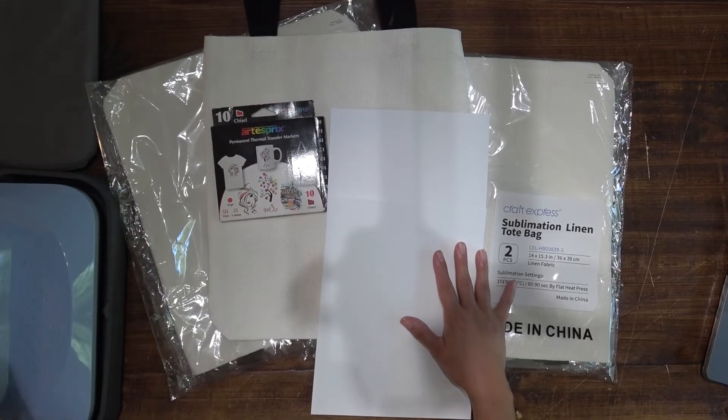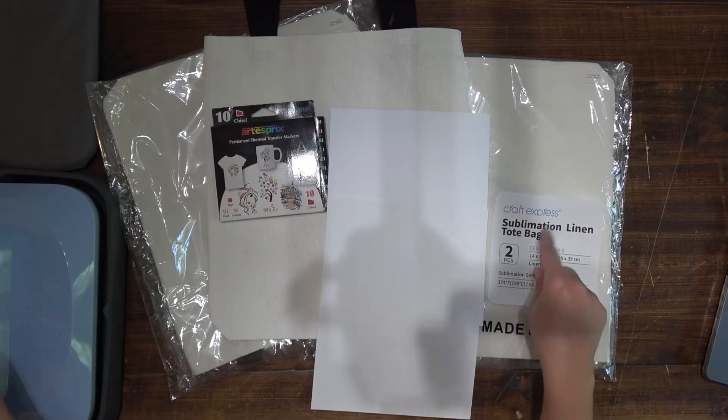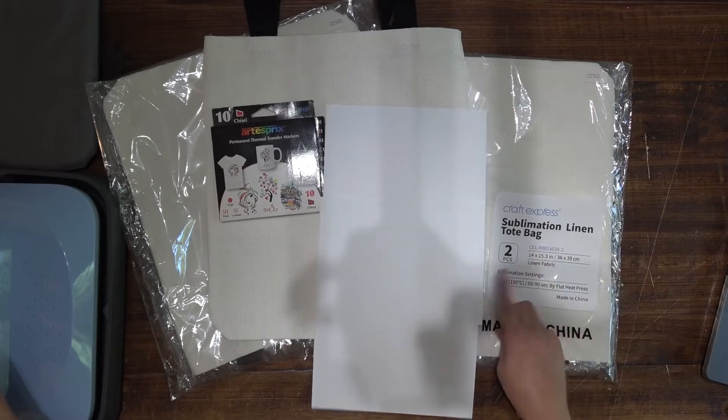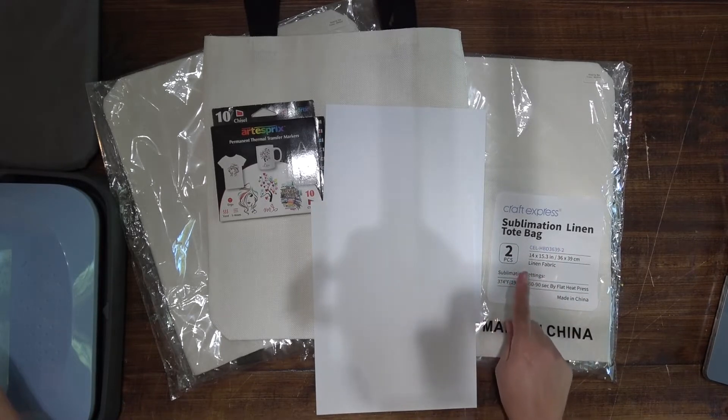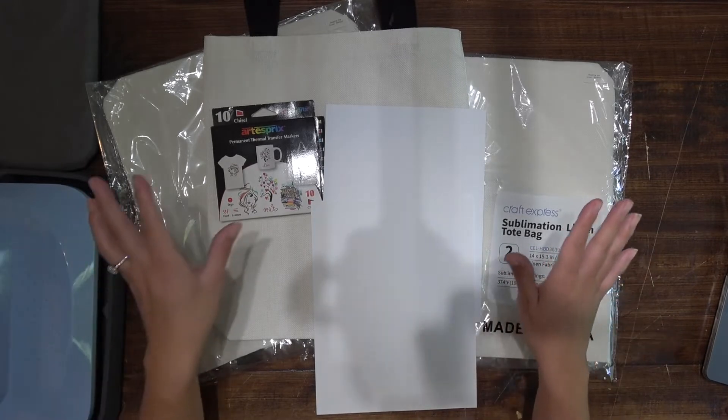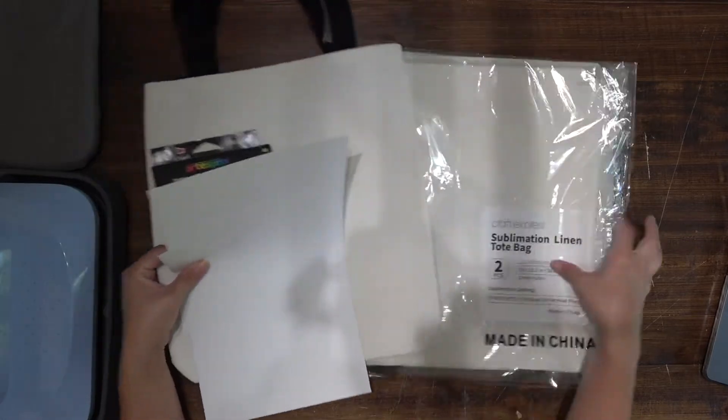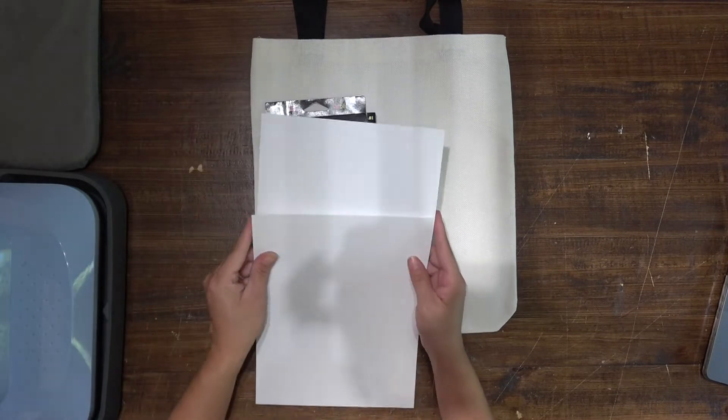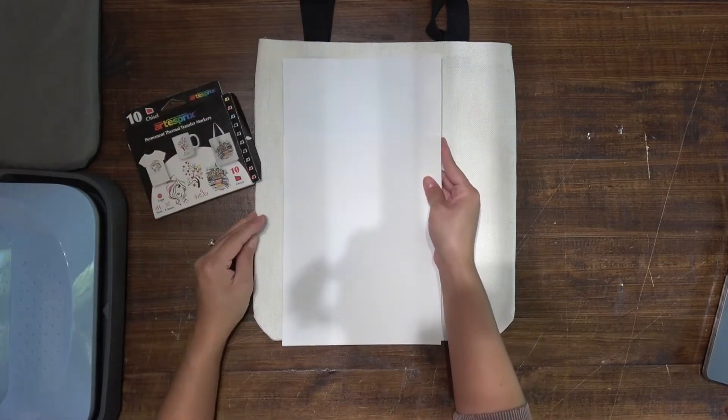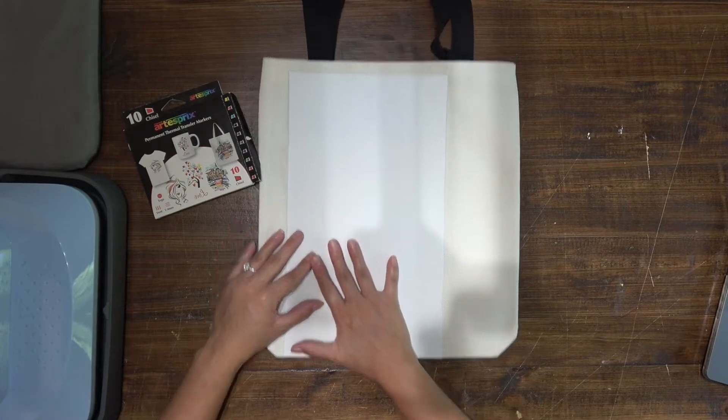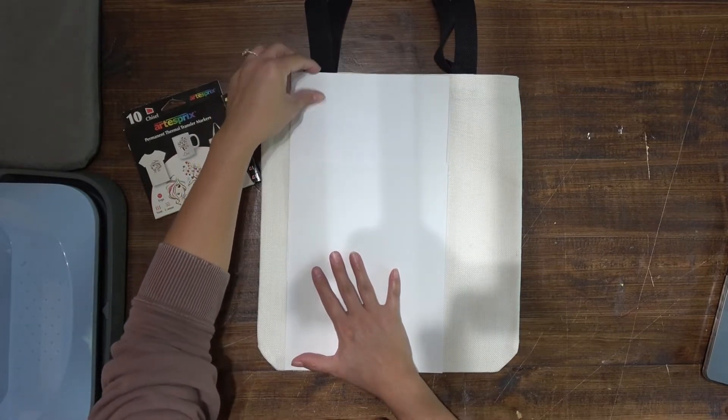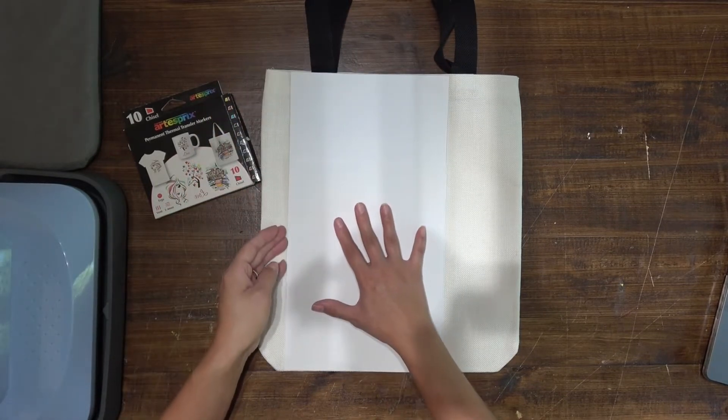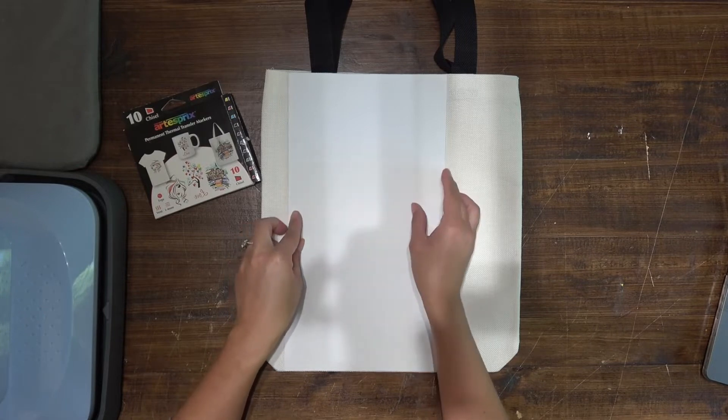So I already have my heat press set up. The cool thing about Craft Express, all their blanks, they come with your settings already on there. So it's at 374. We're going to press it for 80 seconds. So I'm going to move all these over. Now I have extra scrap paper because I want to be able to make straight lines. So I'm just going to kind of line this up like this and make sure that it's really straight.